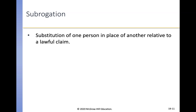Subrogation is a concept that allows one person to be substituted in place of another relative to a lawful claim. Insurance companies have the right of subrogation — they can step into the shoes of the party they compensate and sue any party the compensated party could have sued. For example, in a car wreck, if your insurance company pays and it turns out it's not your fault, the insurance company may sue any party to the wreck you could have sued.